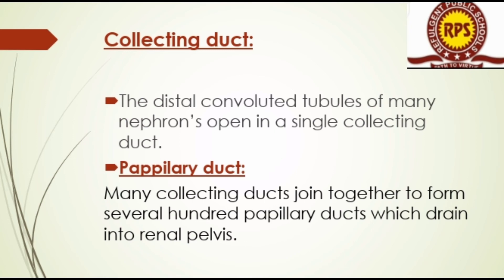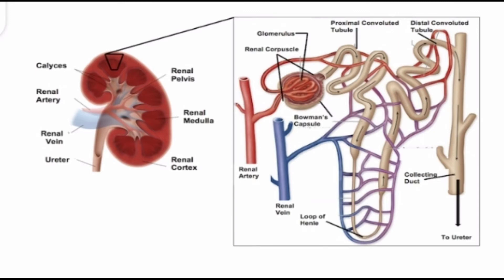Here is the structure of the nephron. You can see how the outer part is cut and the dissected portion is shown. The diagram labels the glomerular capsule, renal corpuscle, renal artery, renal vein, loop of Henle, proximal convoluted tubule, distal convoluted tubule, and finally the collecting duct which opens into the ureter. One dissected portion is shown on one side and another view is shown on the left.